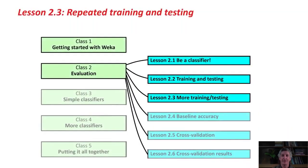Hello again. In the last lesson we looked at training and testing. We saw that we can evaluate a classifier on an independent test set, or using a percentage split with a certain percentage of the data used to train and the rest for testing. Or — and this is generally a very bad idea — we can evaluate it on the training set itself, which gives misleadingly optimistic performance figures. In this lesson we're going to look at a bit more about training and testing.